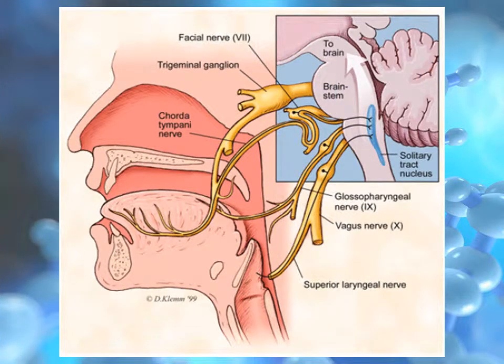Now I should cover the pathway of the signals and where taste is interpreted. Taste is not only transmitted by the chorda tympani nerve of the facial nerve, but also by the glossopharyngeal nerve and the vagus nerve. They all synapse to a second-order neuron at the solitary tract nucleus in the brainstem. The signal is then transferred to the ventral posterior medial nucleus of the thalamus, synapsing again to a third-order neuron, and is finally interpreted at the gustatory cortex found in the anterior insular frontal operculum.